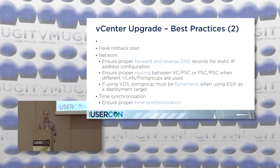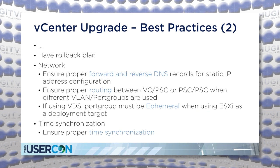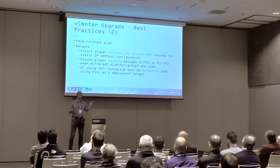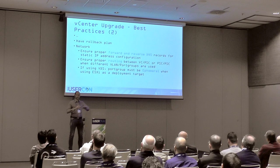Make sure that forward and reverse DNS is set up — verify that you can access the host name and it resolves properly to IP addresses. Ensure there is proper routing between each node included in the upgrade: between the target vCSA and source vCSA, as well as from the jump box to both source and target vCSA.